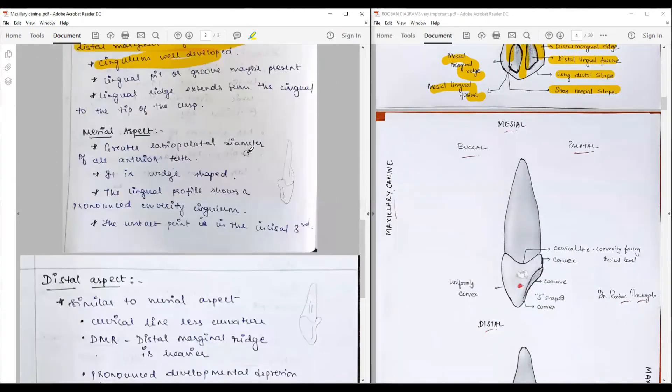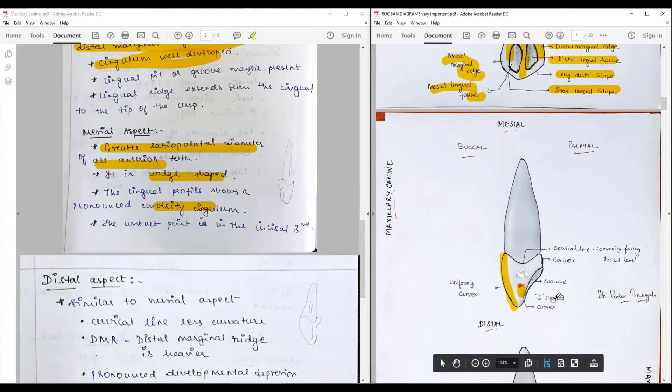Then we have the mesial aspect. Mesial aspect has a greater labio-palatal diameter of all teeth, wedge-shaped, and shows much pronounced concavity along the cingulum area. Incisal third is the contact area. From the buccal outline it is uniformly convex. In the distal surface it forms an S-shape: initially from the cusp tip it is convex, then forms a concave, then a convex. So convex, concave, convex—that is S-shaped. The cervical line is convex facing the incisal level, deeply placed. The root is uniformly tapering, nice, neat, slender.